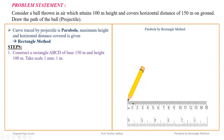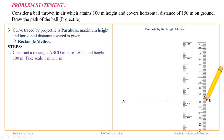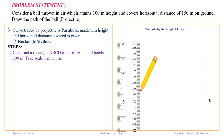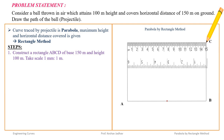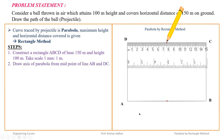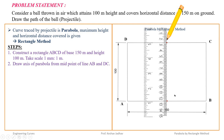Construct rectangle ABCD where the base AB is equal to 150 mm. From the midpoint of line AB at 75 mm, draw the axis of the parabola. The height of this rectangle is 100 mm, so draw a vertical line of 100 mm and complete the rectangle ABCD. Then draw an axis from the midpoint of AB using a center line and give it the name EF.